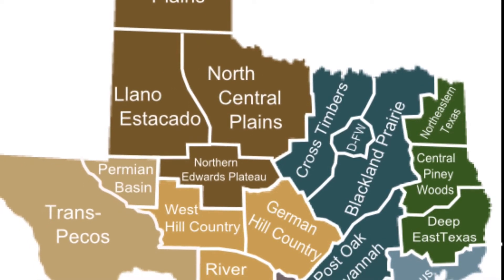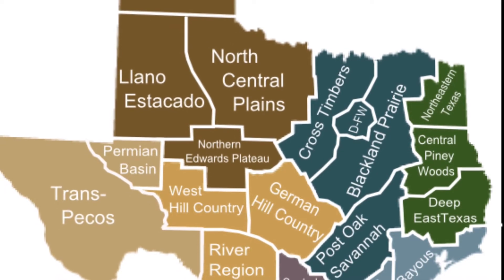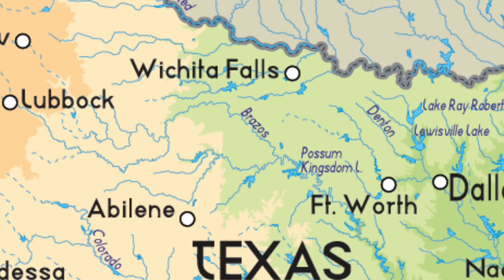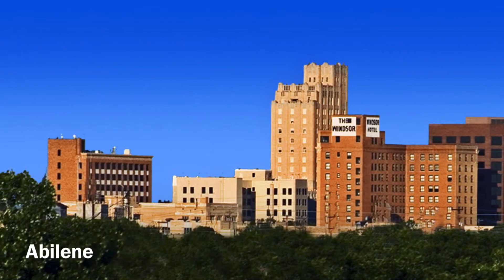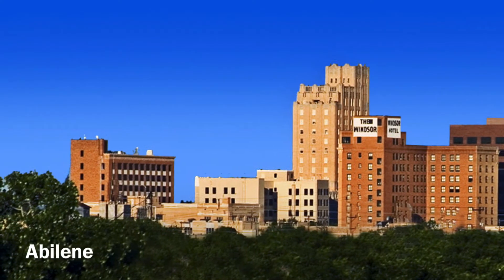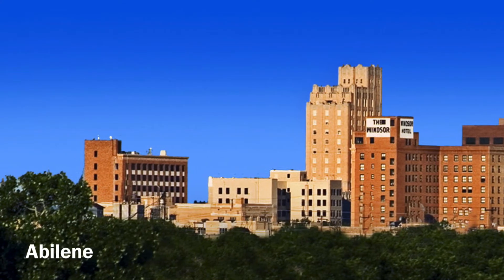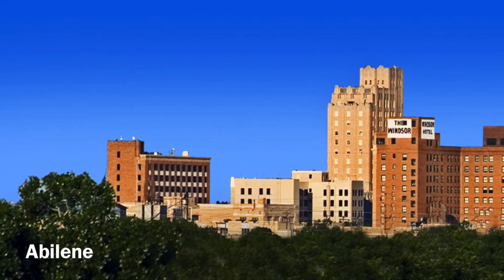Within the North Central Plains is an area known as the Rolling Plains, the largest area of the region. Its climate, terrain, and economy are very dry, with lots of grass, scrub plants, hills, and mesas. The economy includes trade, business, some ranching, some oil, and some natural gas, though not as prominent as the Permian Basin. Major cities in the Rolling Plains include Wichita Falls in the northern part, Abilene, and San Angelo.